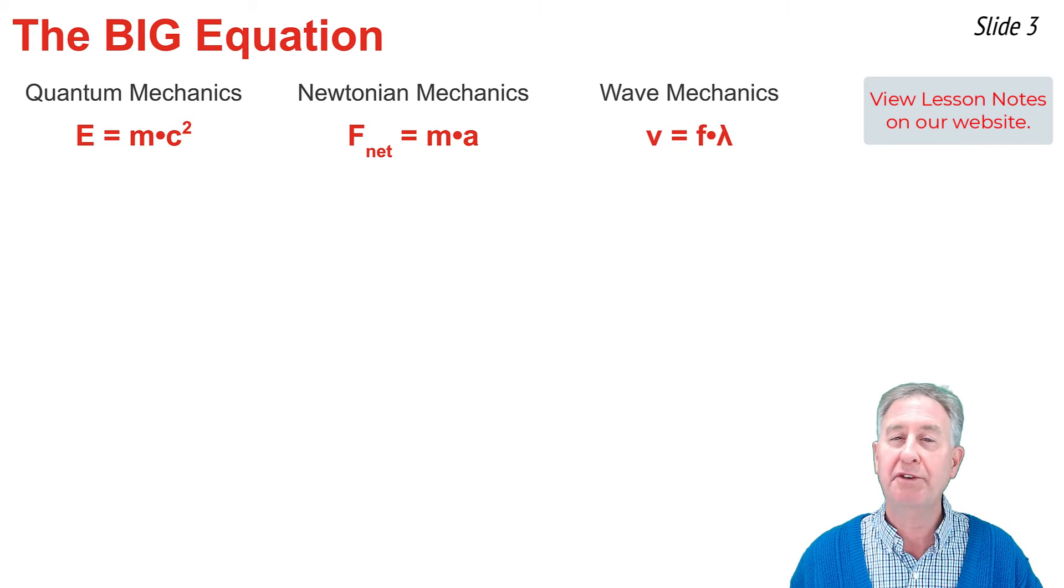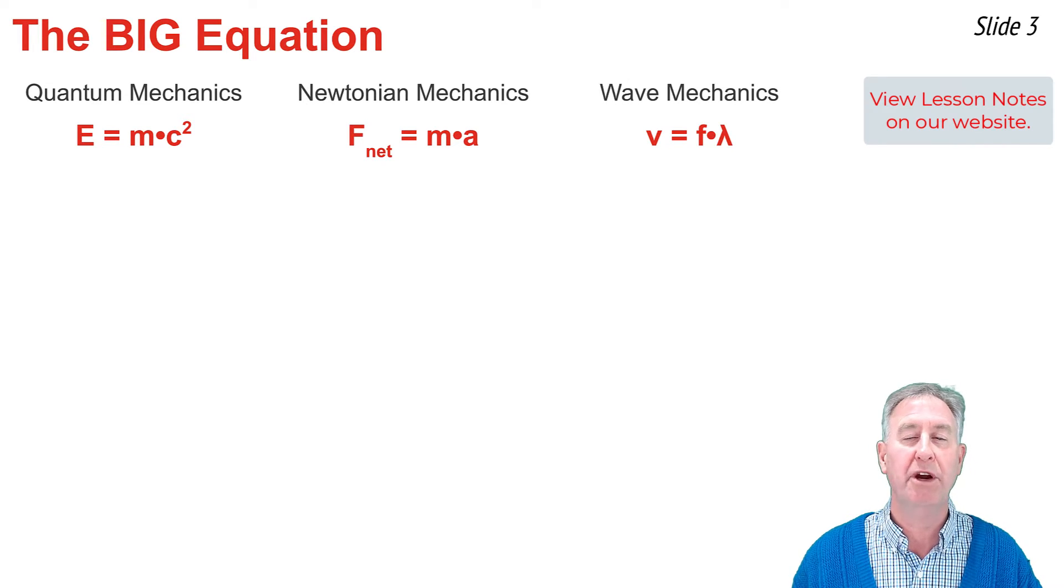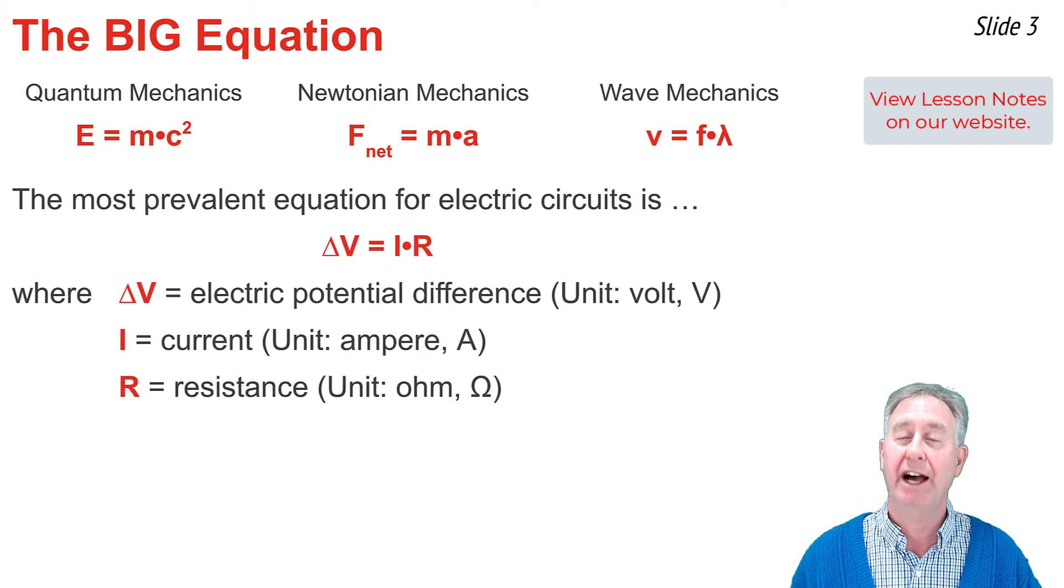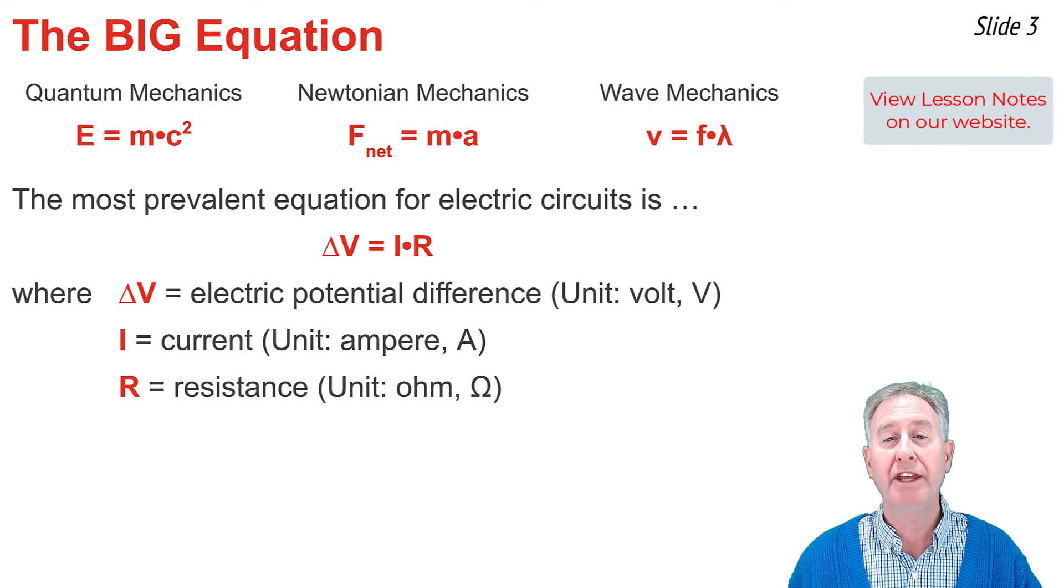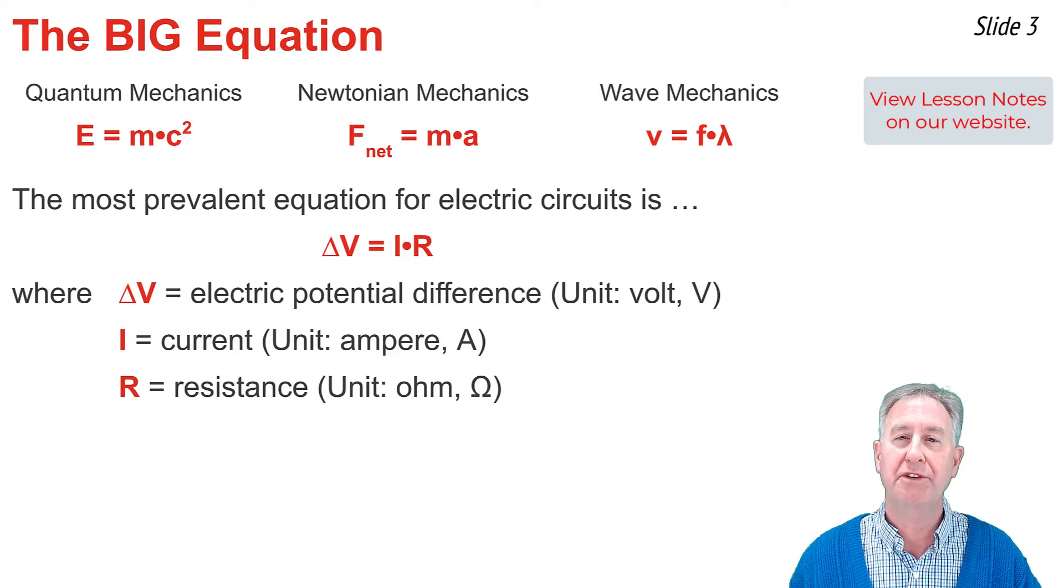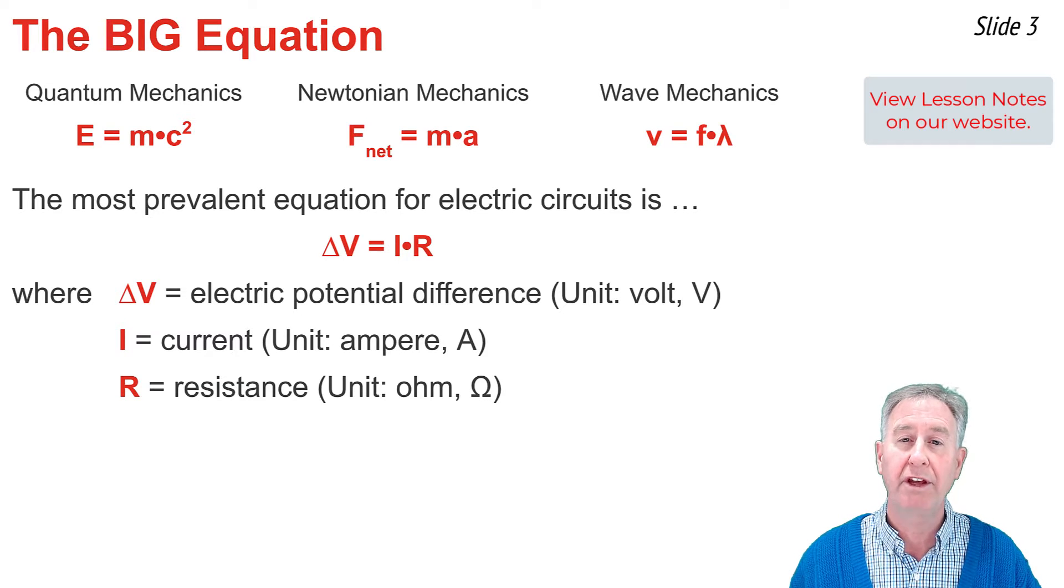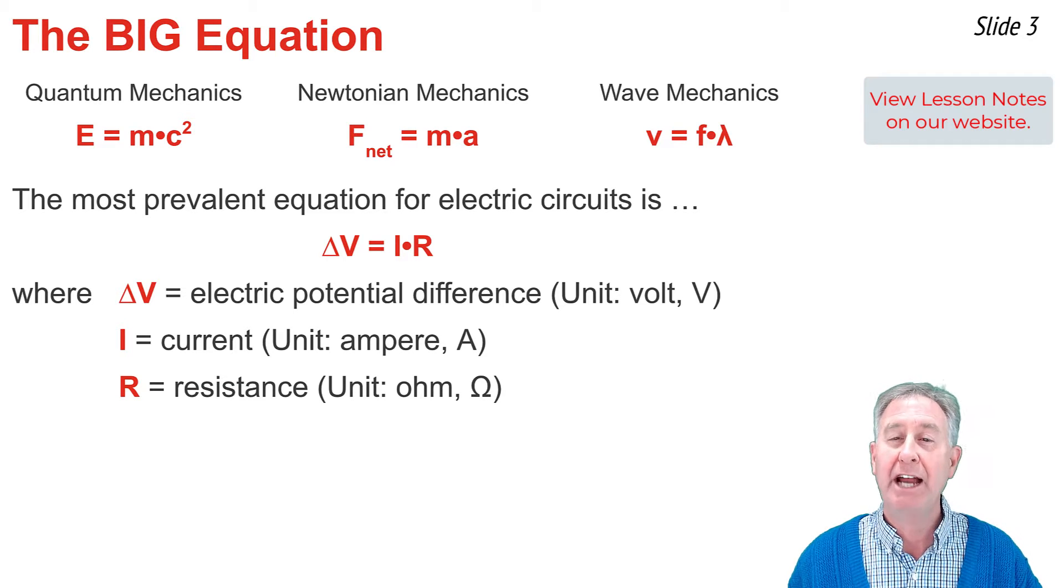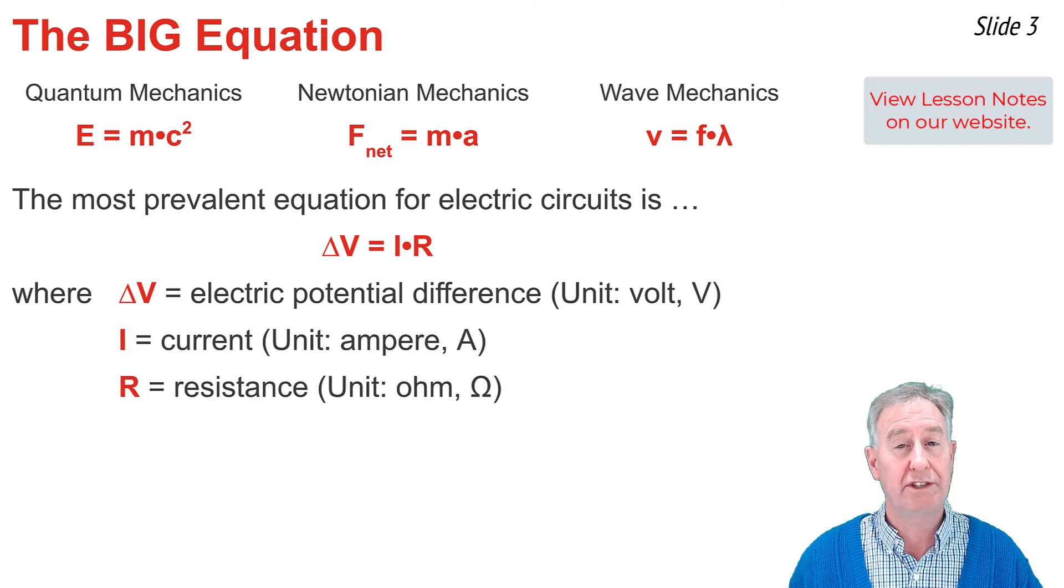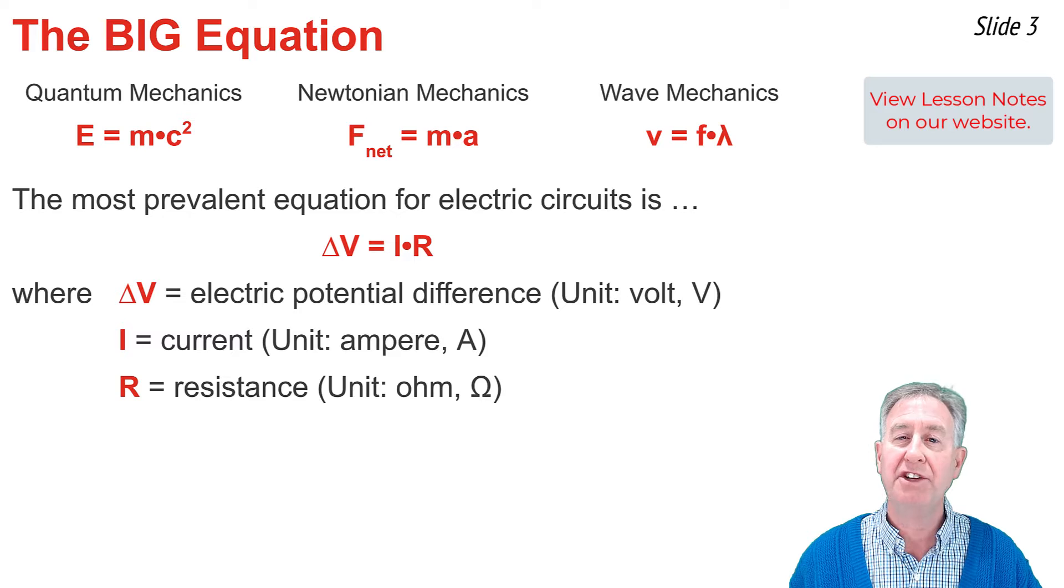When it comes to electric circuits, the equation that is most prevalent is without a doubt delta V equals I times R, where delta V represents the electrical potential difference. The unit is the volt, abbreviated V. The I represents the current. The unit is the ampere, or amp, abbreviated A. And R stands for resistance. The unit is the ohm, abbreviated with the Greek symbol omega.